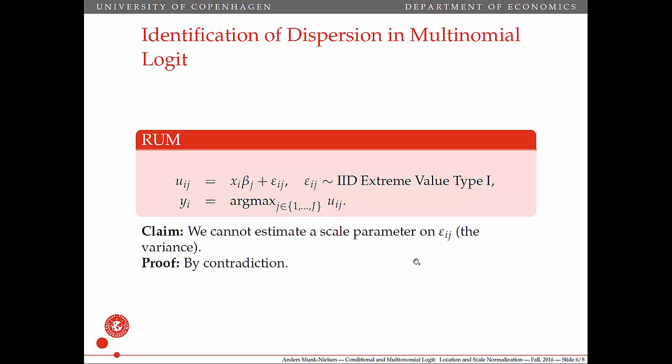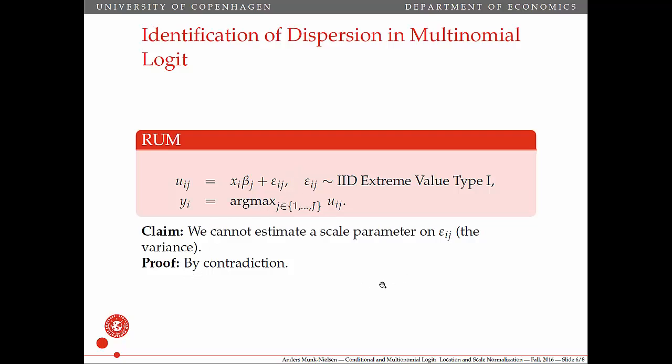Okay. The third thing I said was that we can't identify the variance of the epsilon term or the dispersion of the epsilons. We can't identify the variance of this guy. And in some sense, the betas are going to be relative to how dispersed this variance term is.